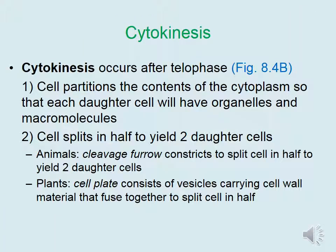Cytokinesis occurs after telophase. During cytokinesis, the cell partitions the contents of the cytoplasm so that each daughter cell will have organelles and macromolecules besides DNA. The cell splits in half to yield two daughter cells. The process is a little bit different in animal versus plant cells because plant cells are surrounded by a rigid cell wall.